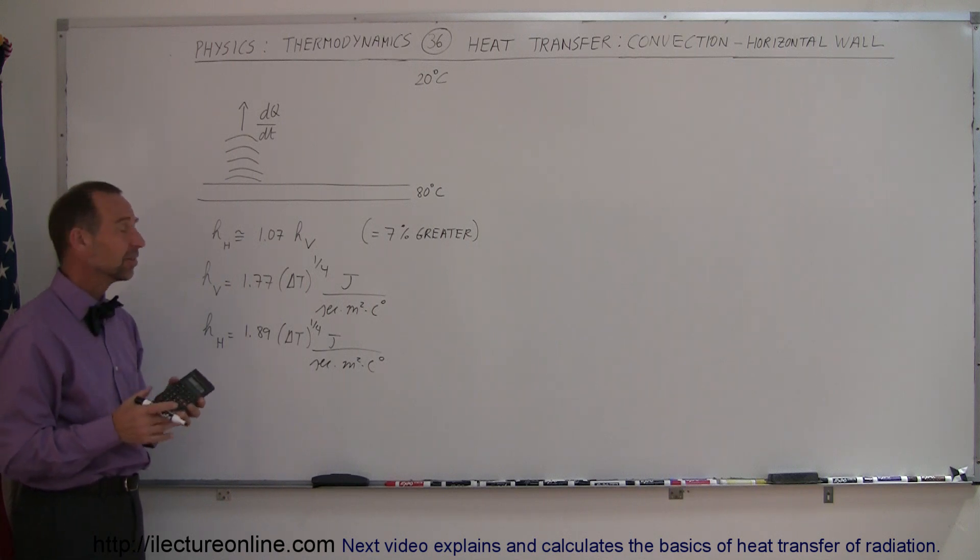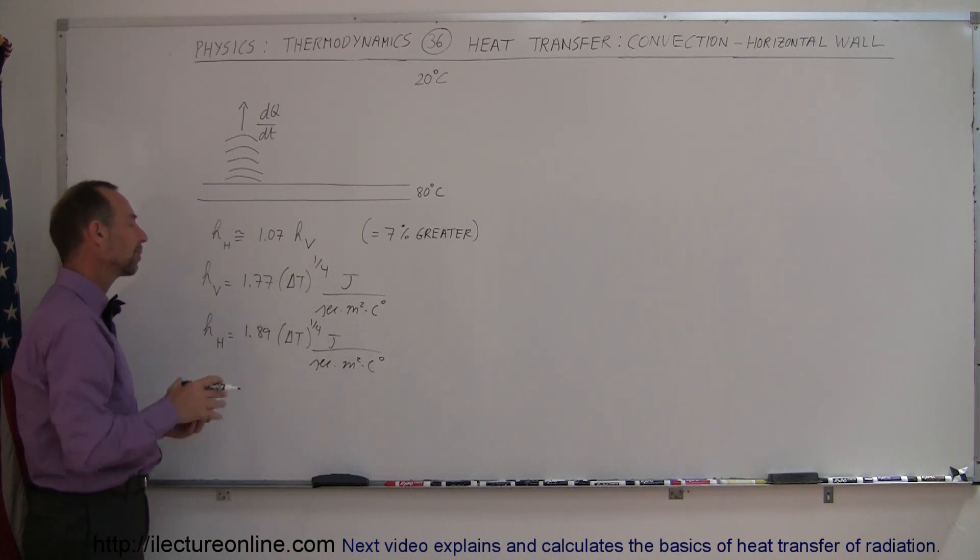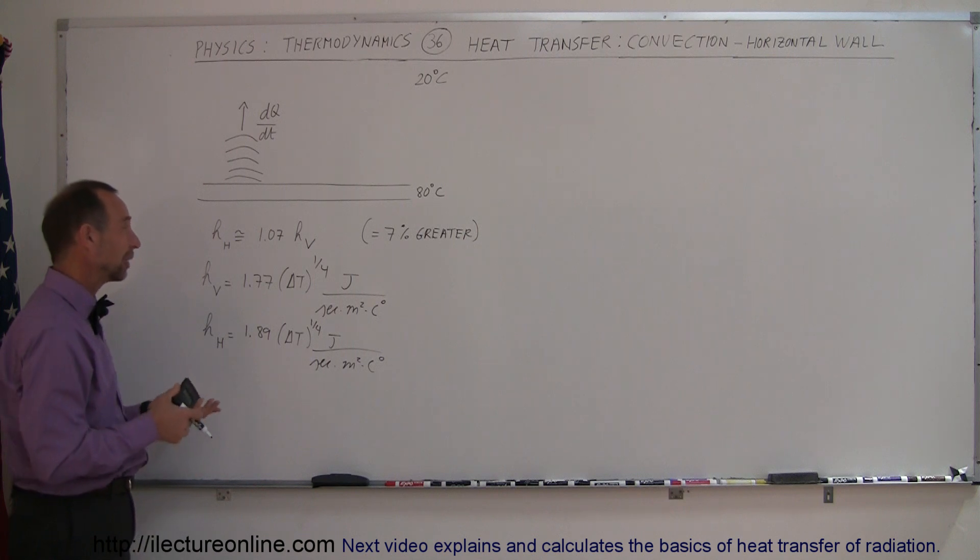The way they come up with these constants, these numbers, is they actually do some measurements experimentally. Conditions have to be just right. So you can sometimes find, I've looked some of these numbers up, and sometimes they vary by as much as 8 or 9%, but 7% is a pretty good estimate.